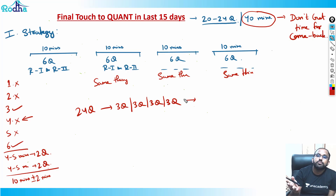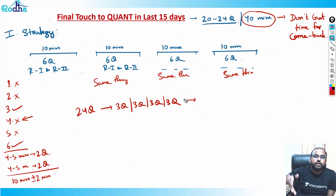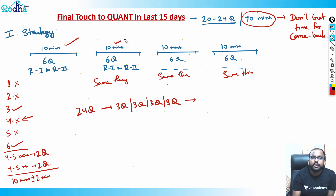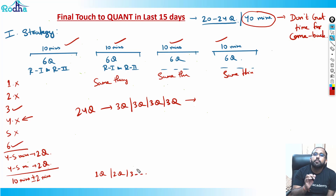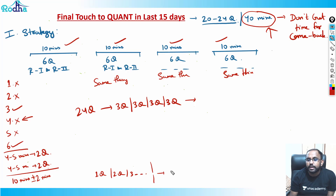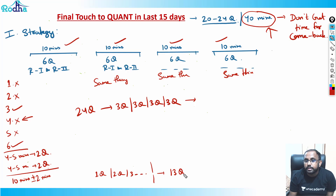The first benefit of this strategy is you won't miss out on questions at the end — you'll always reach the last question. The problem with random attempting is you start from question one, two, three sequentially. Even if the paper is going smoothly, you might get stuck at question 13, having solved 8 or 9 questions feeling good — but now 30 minutes are gone and only 10 minutes are left for the remaining 11 questions.